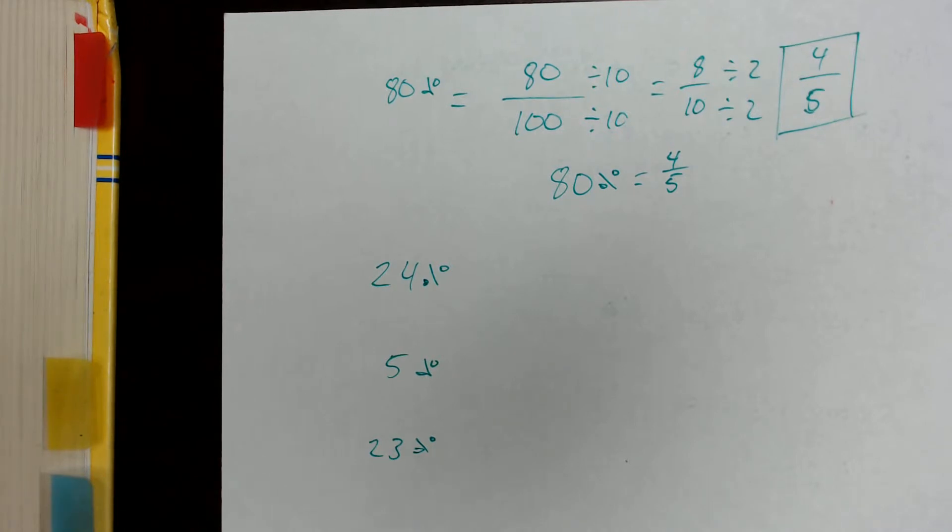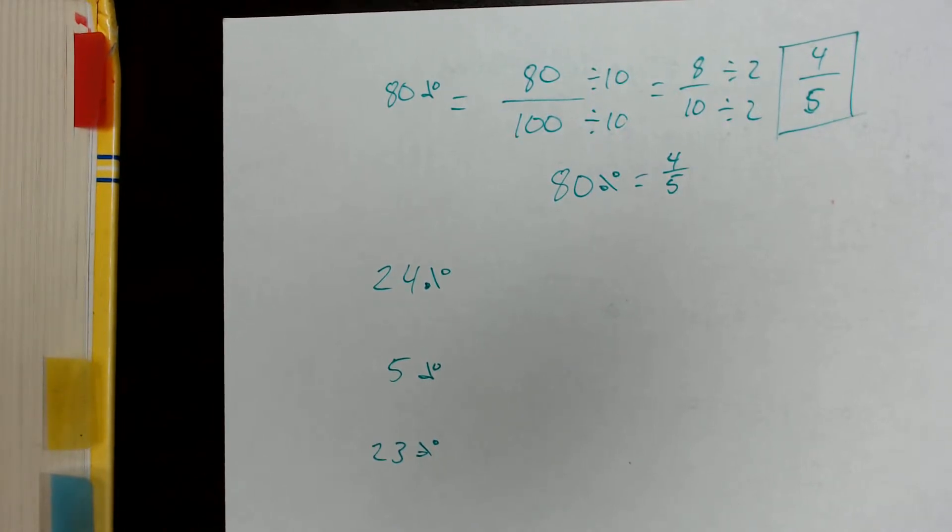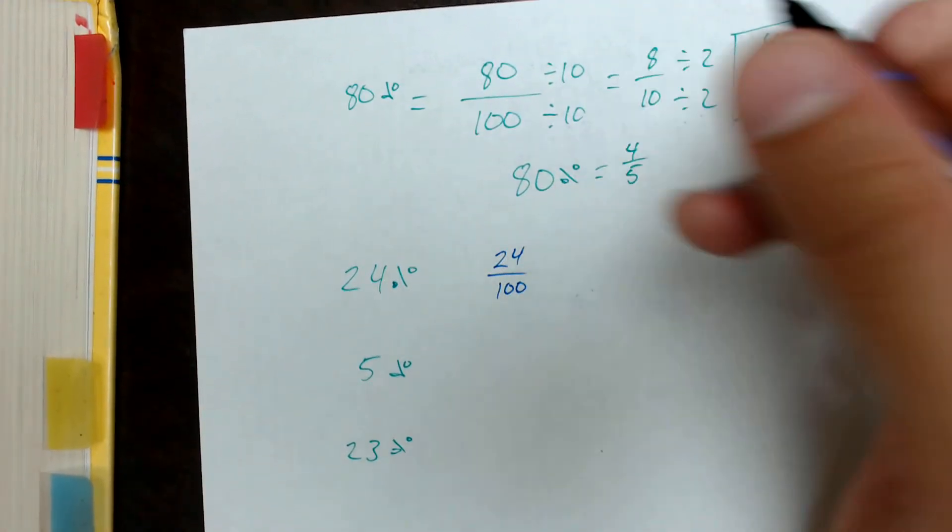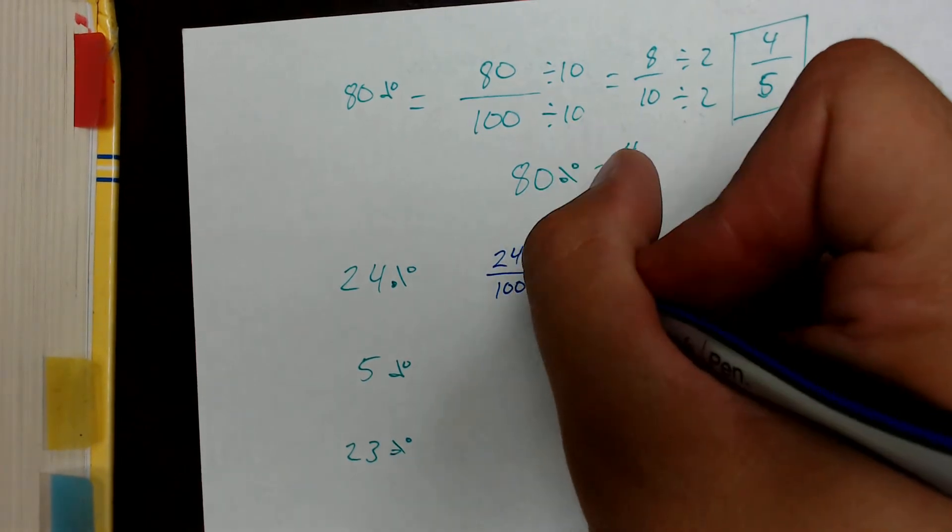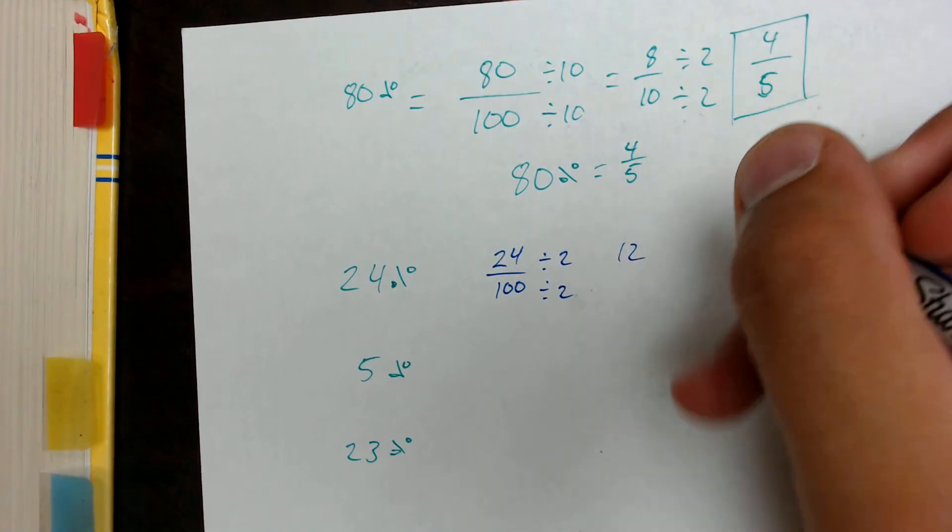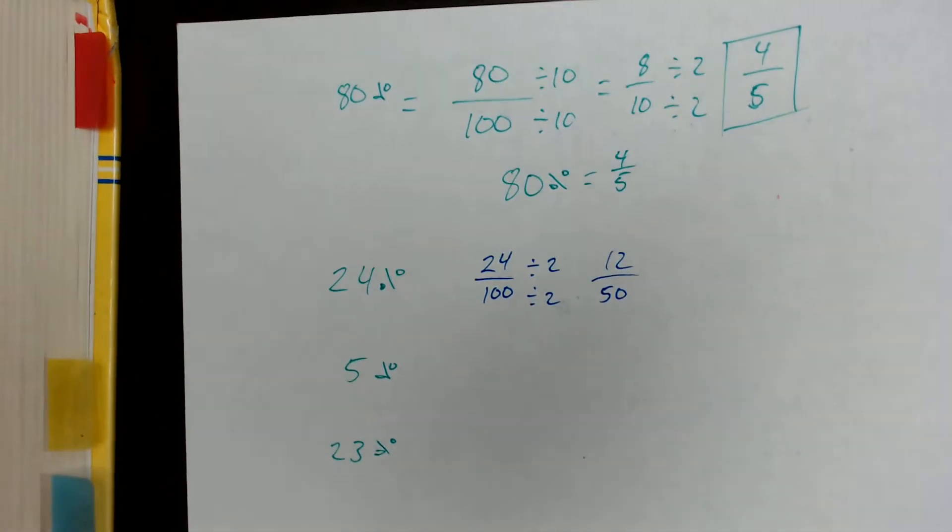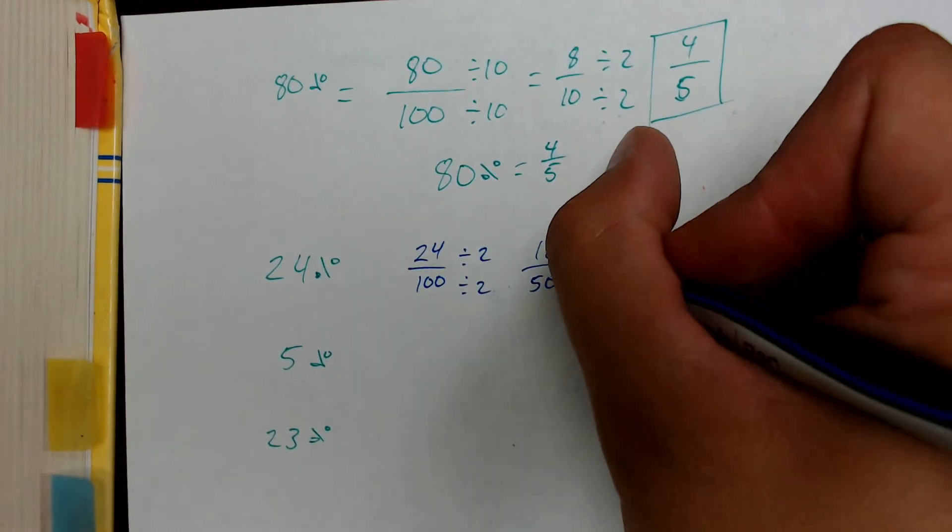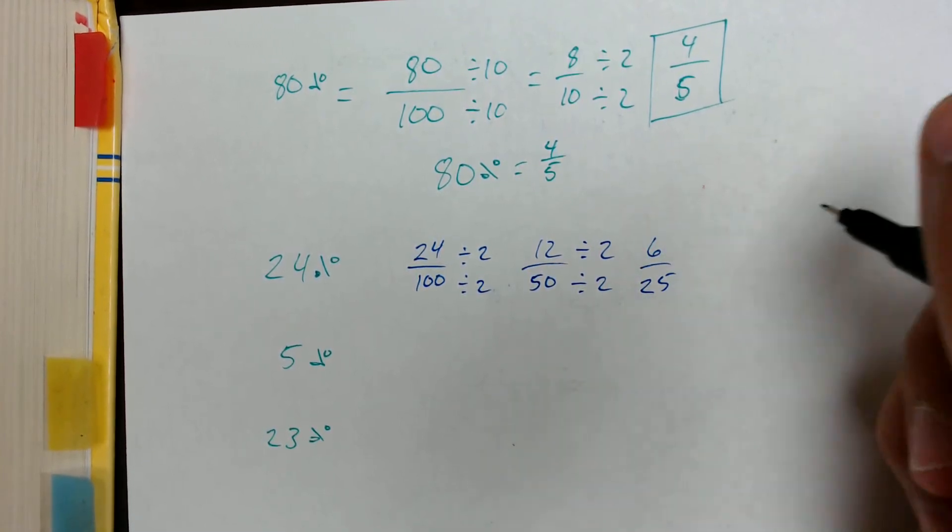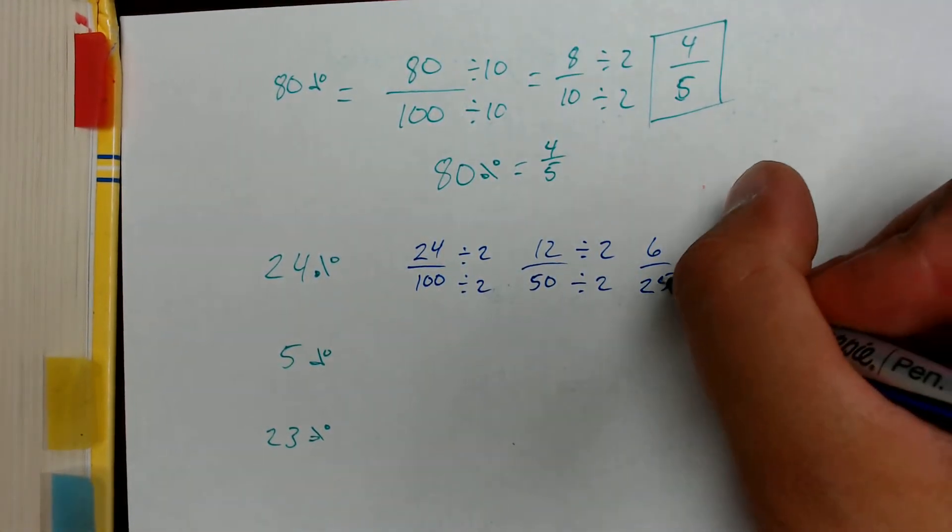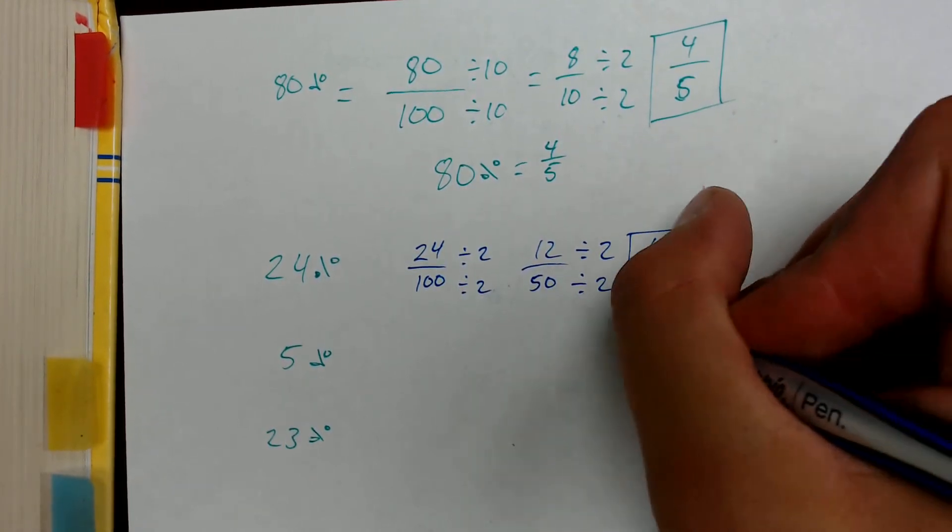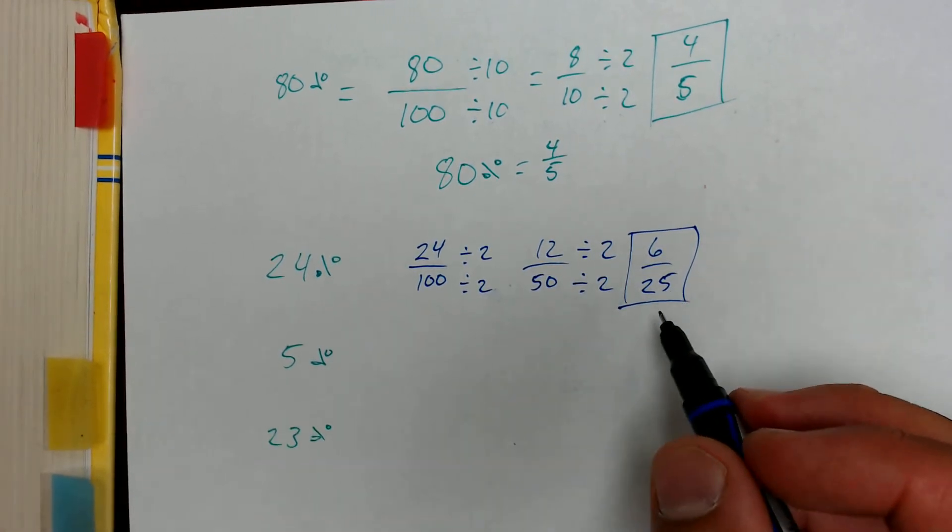Again, we're just going to be using the same method of taking the percent and writing over the number 100. So I'll take 24%. I'll put 24 over 100. I see that both of these numbers are divisible by 2. So I'm going to have a couple of steps here. 24 divided by 2 is 12. 100 divided by 2 is 50. And again, these are both still divisible by 2. So 12 divided by 2 is 6. 50 divided by 2 is 25. 25 isn't divisible by 3, 2, or 6. So that's as low as it can go. So 24% is equal to 6 25ths.